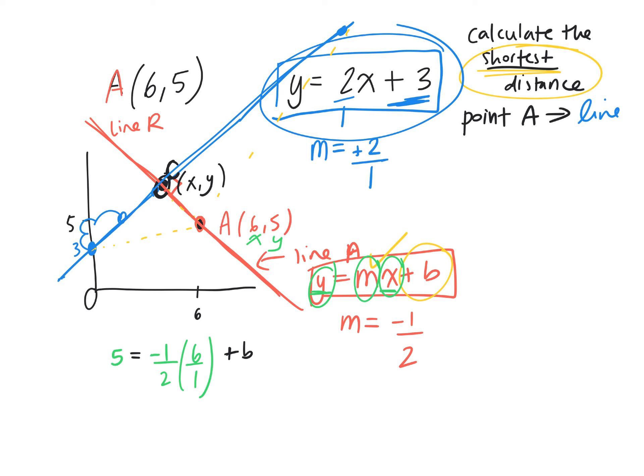So we're trying to figure out b. I plugged in my y value, my x value, and my m, and we're going to simplify. 5 equals negative 6 over 2 plus b. What's negative 6 divided by 2? Negative 3. So b equals 8. The equation of the red line is y equals negative 1 over 2x plus 8.